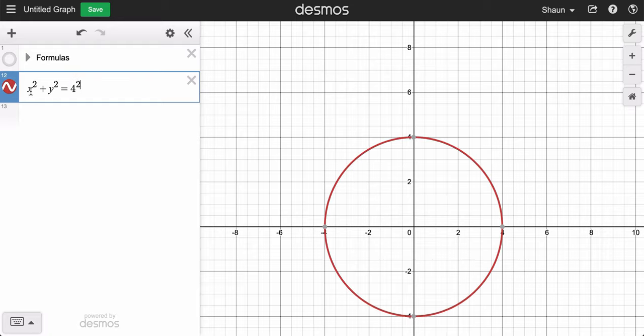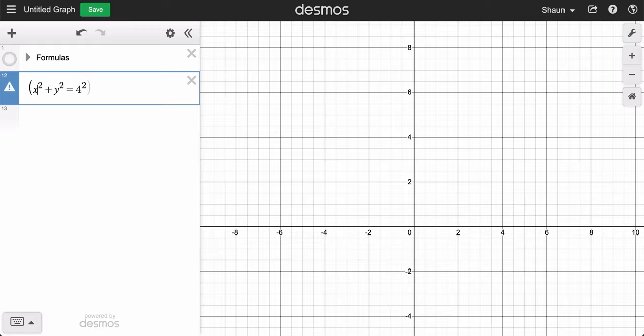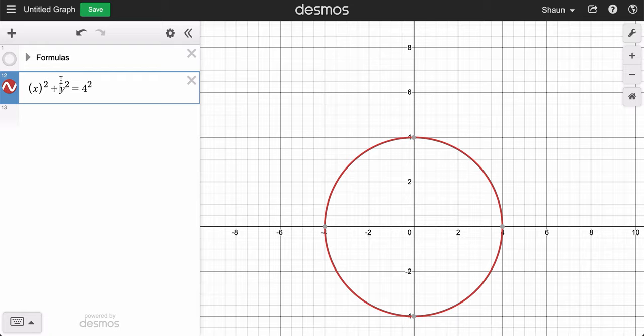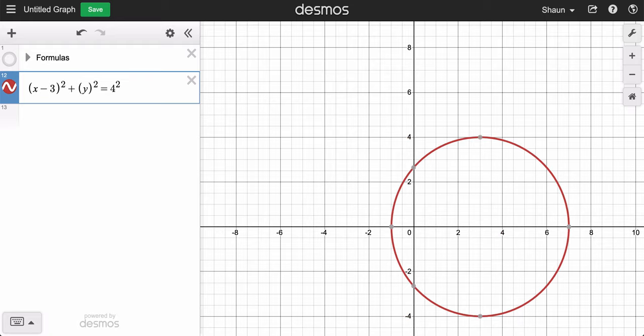If you don't want the center to be at the origin, you adjust the x value by translating it. So I'm going to put parentheses around x, parentheses around y. Now watch what happens. As I subtract from x, let's say I subtract 2, it moves to the right by 2. So here it is.